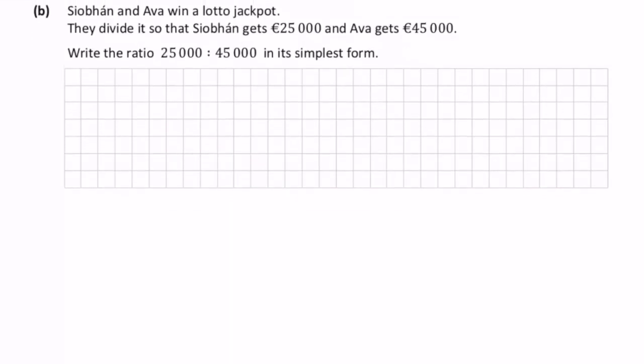Siobhan and Ava win a lotto jackpot. They divide it so that Siobhan gets 25,000 and Ava gets 45,000. Write the ratio of 25,000 to 45,000 in its simplest form.